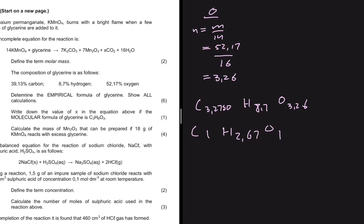We have a decimal number, so we must multiply by the lowest possible whole number to get whole numbers. Multiplying by 1 or 2 still gives decimals, but multiplying by 3 gives whole numbers. We get C₃H₈O₃, and this is the empirical formula for glycerine.